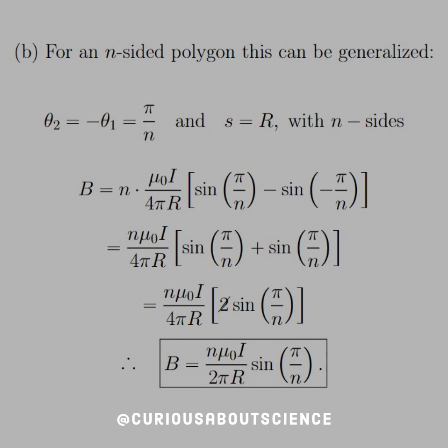And then, we would also have to multiply by n, again, keeping S equal to R, since we want the distance from the center to the side. And so, we see here, if we modify the line segment to the generalized case, we multiply by n, and then we have times mu naught I over 4 pi R, again, sine pi over n minus sine of negative pi over n.